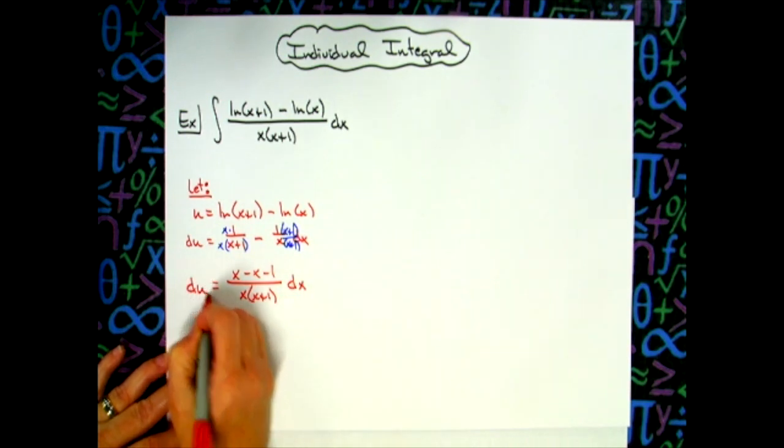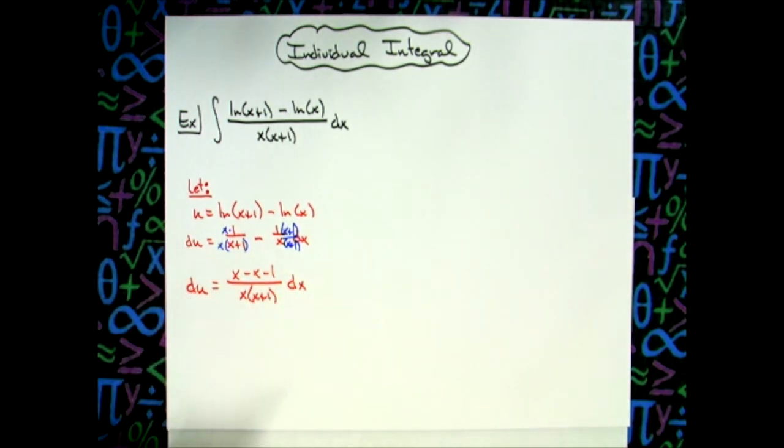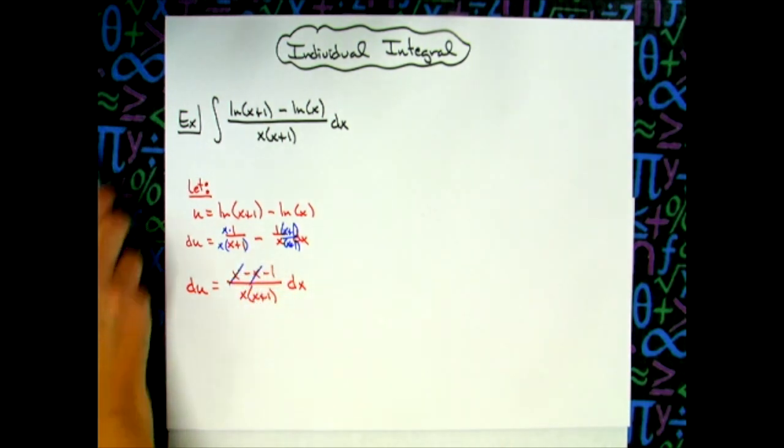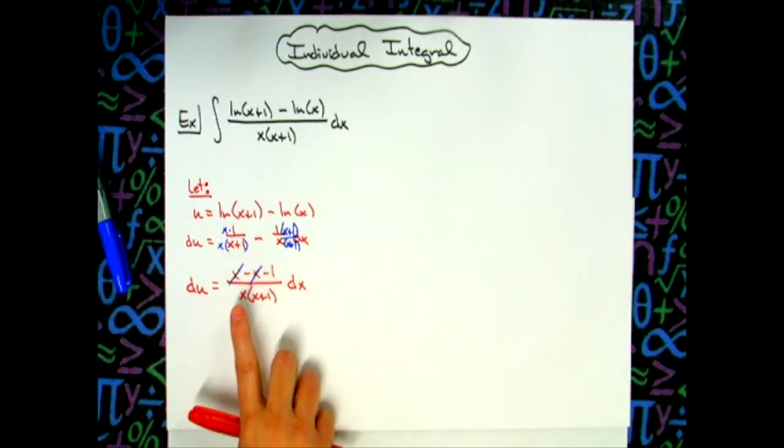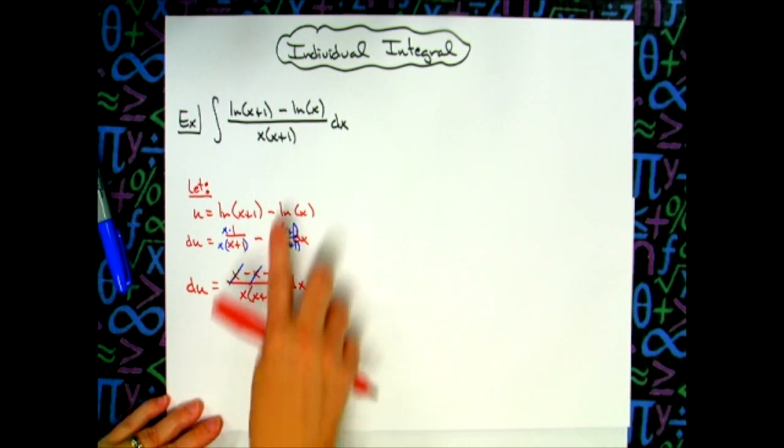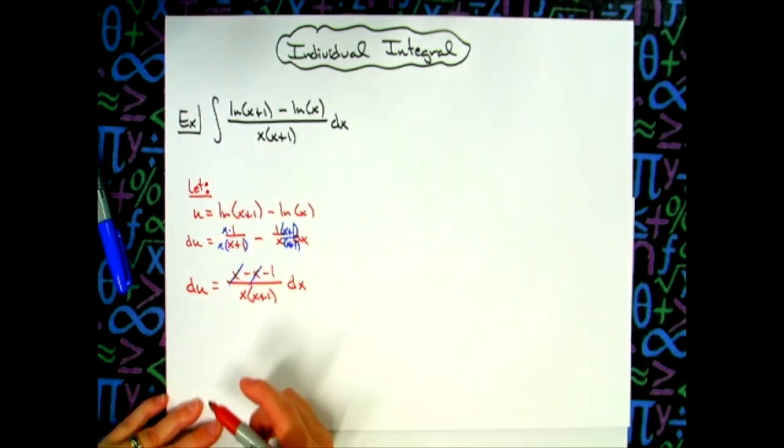Let's go ahead and bring that du down. Now cleaning up just a little bit further, x minus x on that top is going to go away. I've got a negative 1 over x times x plus 1. And I don't want to get in a hurry and distribute or anything because as you now see, we are seeing that in the denominator right there.